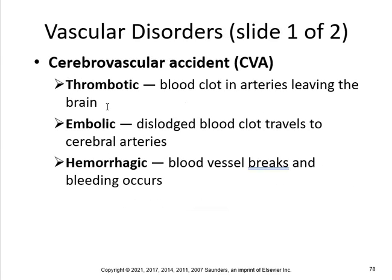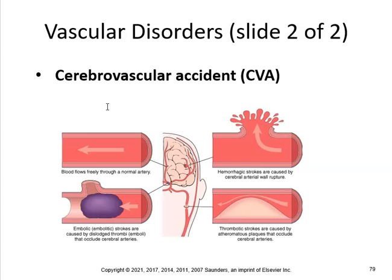CVA — cerebrovascular accident — is a stroke. There are three types: thrombotic, which is a blood clot in arteries of the brain; embolic, which is a dislodged blood clot traveling to the cerebral arteries; and hemorrhagic, in which a blood vessel breaks and bleeding occurs. Hemorrhagic strokes are caused by cerebral artery wall ruptures; embolic strokes are caused by dislodged thrombi or emboli that occlude cerebral arteries; thrombotic strokes are caused by atheromatous plaques that occlude cerebral arteries.